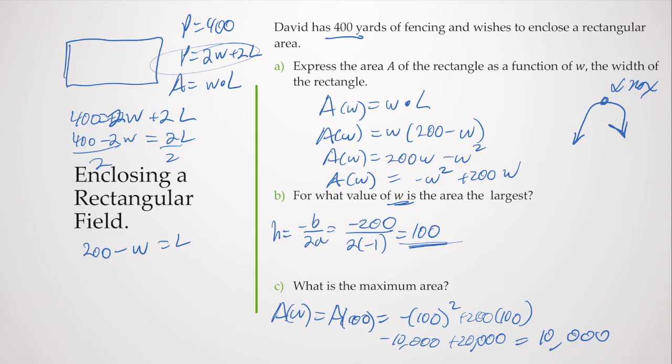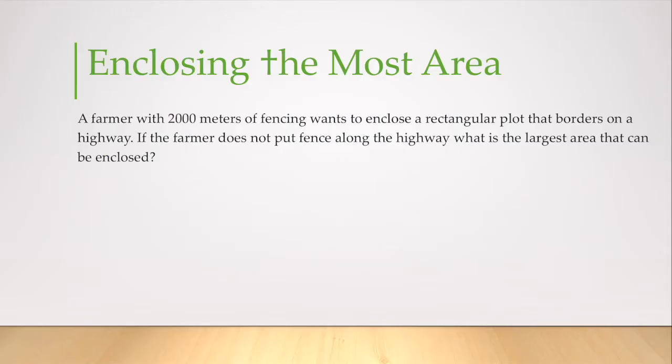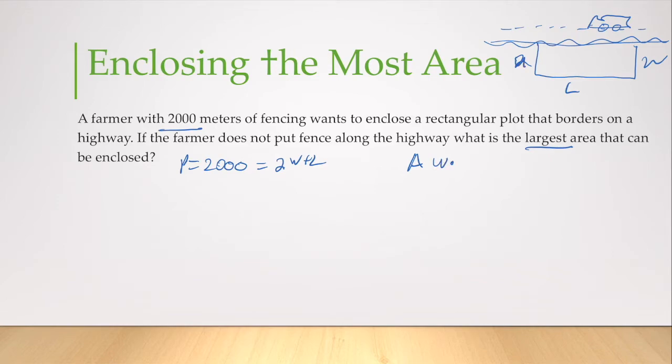A farmer with 2,000 meters of fencing wants to enclose a rectangular plot that borders on a highway. So I don't have to put any fence there because there's little cars driving by. What is the largest area that can be enclosed? Here I know my perimeter is 2,000. I've got length and 2W is my perimeter, and area is still width times length.